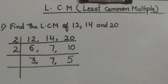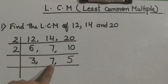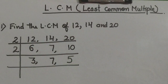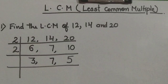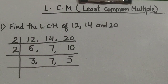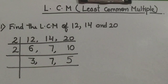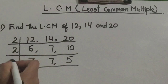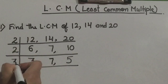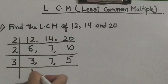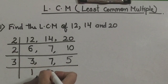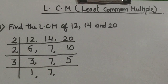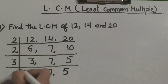Now we check if we can divide any of the numbers — 3, 7, 5 — by 2. We cannot. So the next prime number is 3. We check if we can divide any of the numbers by 3. Yes, we can divide 3 by 3. 3 ones are 3, so quotient is 1. 7 we cannot divide, so we write it as it is. 5 also we write as it is.